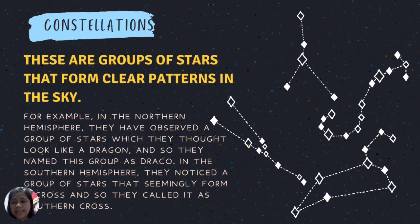Constellations are groups of stars that form clear patterns in the sky. The Asian people first observed these groups of stars as outlines of animals and other objects. They found it easier to locate and remember constellations when they identified a clear and particular pattern. For example, in the northern hemisphere they observed a group of stars resembling a dragon, naming it Draco. In the southern hemisphere, a group of stars forming a cross was called the Southern Cross.